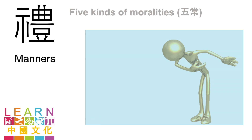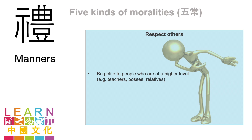The third morality is manners. The idea is that we have to give respect to individuals. One of the ways to do that is to be polite to people, especially to those who are at a higher level than us, such as teachers, our boss, and relatives. This is important as these are the people who take care of us and who teach us — it is a way to show our gratitude. After all, the act of manners should come from our heart, instead of simply adding it just for the sake of it. Imagine showing appreciation to someone who does not care — that doesn't make sense, right?